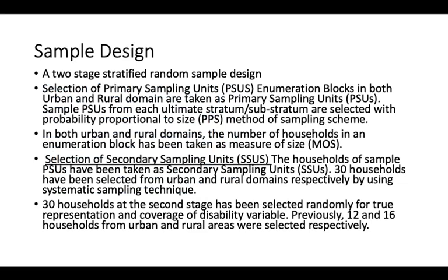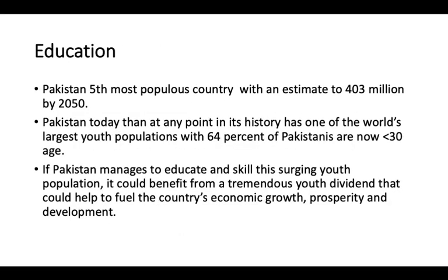The sample design was a two-stage stratified random sampling. Primary sampling units are enumeration blocks of 200 to 250 houses in urban and rural areas. From these blocks, 30 houses are randomly selected as secondary sampling units, from which a detailed survey on living standards, primary education, health, and ICT utilization was assessed. For disability, an additional 30 houses — totaling 60 — were screened.